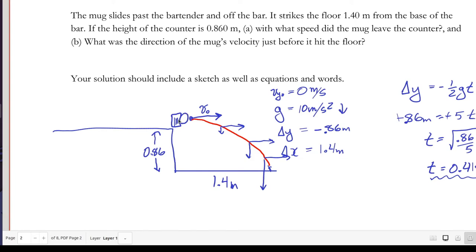In order to fall 0.86 meters in the 0.41 seconds, and travel 1.4 meters forward. The things we care about are how far forward it goes, and how long it's been traveling.